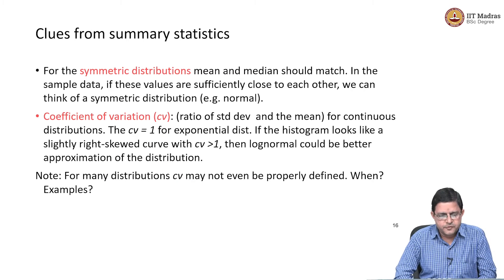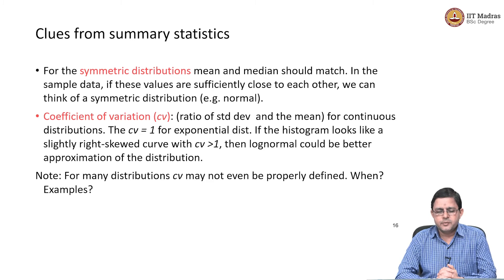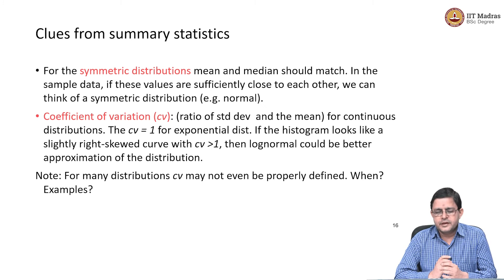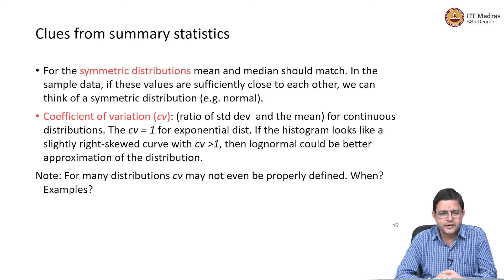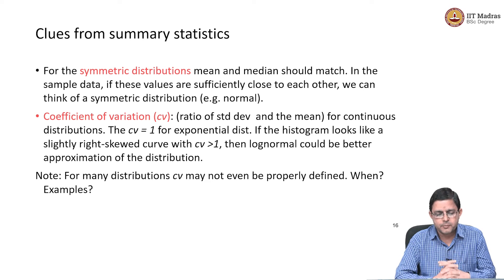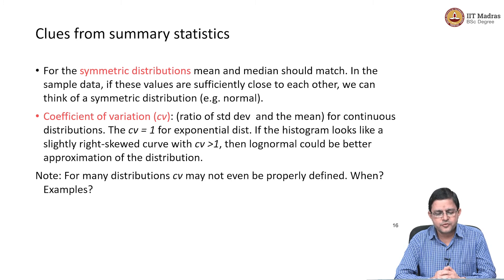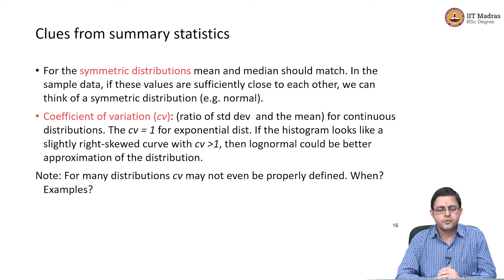Summarizing what we have discussed so far: for symmetric distributions, the mean, median, and mode match. If mean and median are sufficiently close, we may consider symmetric distributions. But if mean and median are not close enough, symmetric distributions are probably not the way forward. We are only making an educated guess at this stage — we have not made any decision yet.